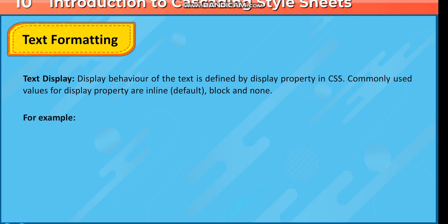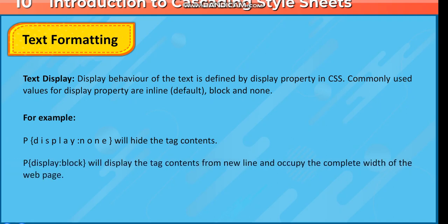For example, p { display: none; } in curly brackets will hide the tag contents. p { display: block; } will display the tag contents from a new line and occupy the complete width of the web page.